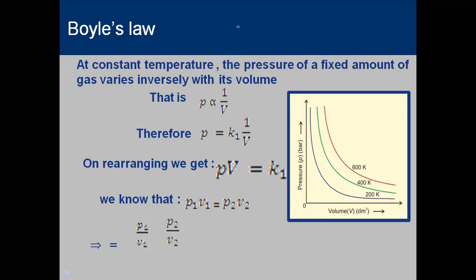If we consider changes in pressure and volume — starting from initial pressure P1 to final pressure P2, and from initial volume V1 to final volume V2 — when we apply pressure P1 on volume V1, we obtain final pressure P2 and final volume V2. Rearranging the formula gives us P1V1 equals P2V2.